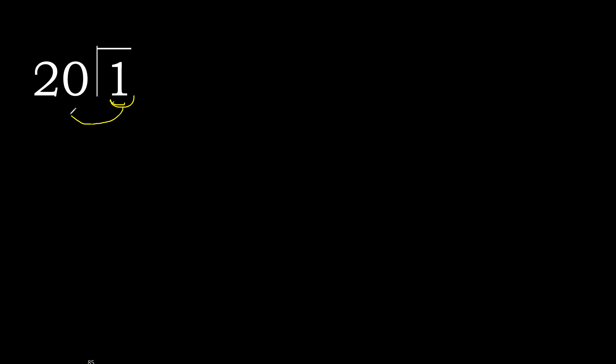1 divided by 20. 1 is less than 20, therefore move to next. There is no number, therefore complete it — always complete with 0.